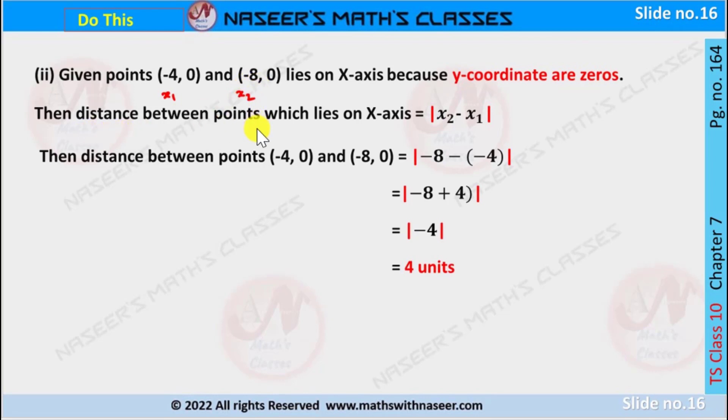When y-coordinates are zeros, then the distance between any two points is |x₂ - x₁|. Now we substitute x₂ and x₁ values. Then we can write it as |-8 - (-4)|. So minus into minus plus, then we can write it as -8 + 4.